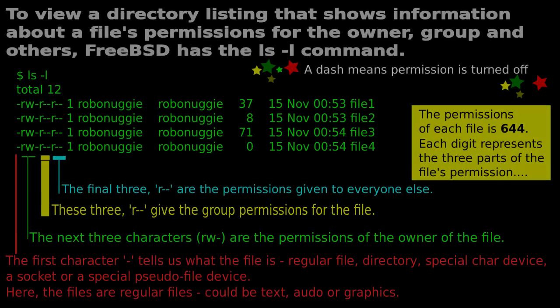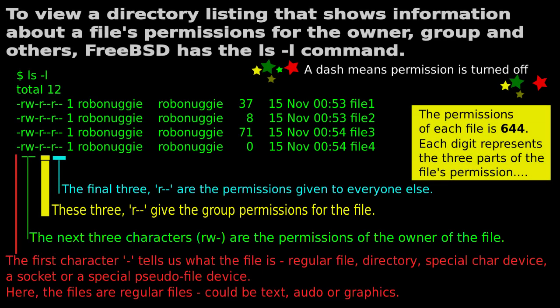To view a directory listing that shows information about a file's permissions for the owner, group, and others, FreeBSD has the ls -l command. The permission of each file is 644. Each digit represents one of the three parts of the file's permission. The first character — the dash — tells us what the file is.